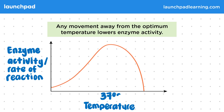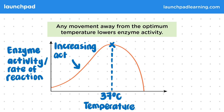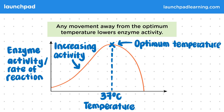This is where 37 degrees sits on our axis. At temperatures lower than 37 degrees, you can see that there is an increasing activity of the enzyme. Remember that as temperature increases, the enzyme and substrates move around and collide more because they have more kinetic energy. This increasing activity peaks at the optimum temperature of 37 degrees.